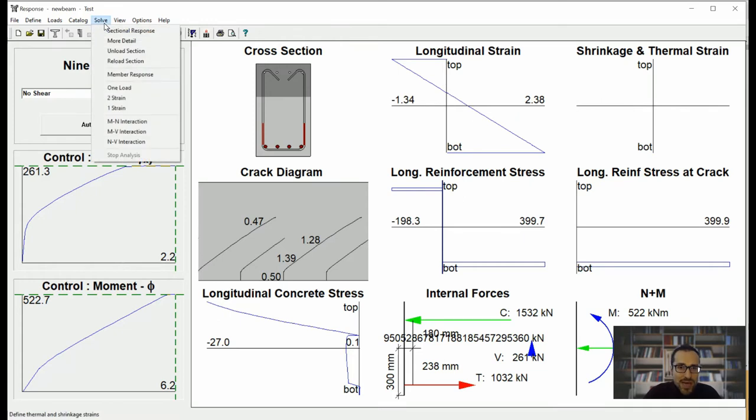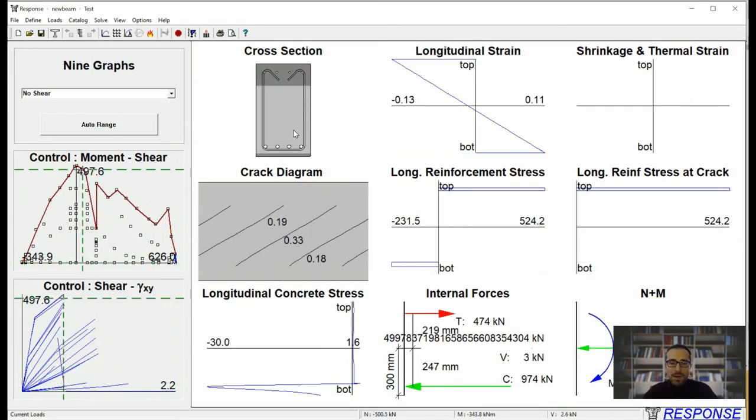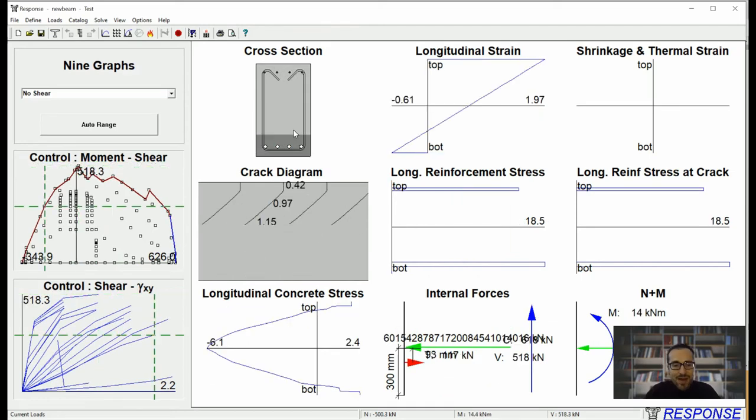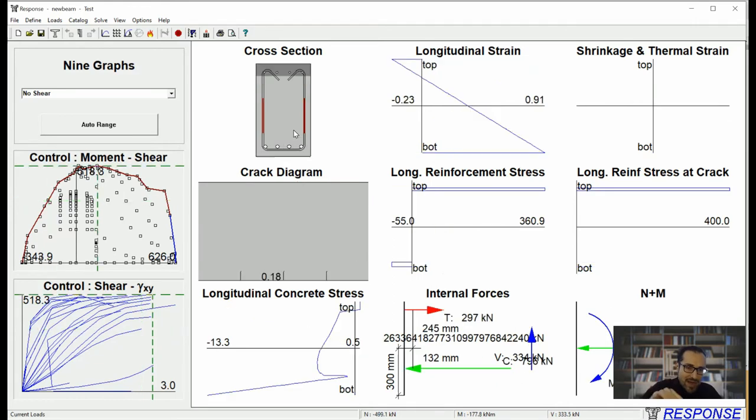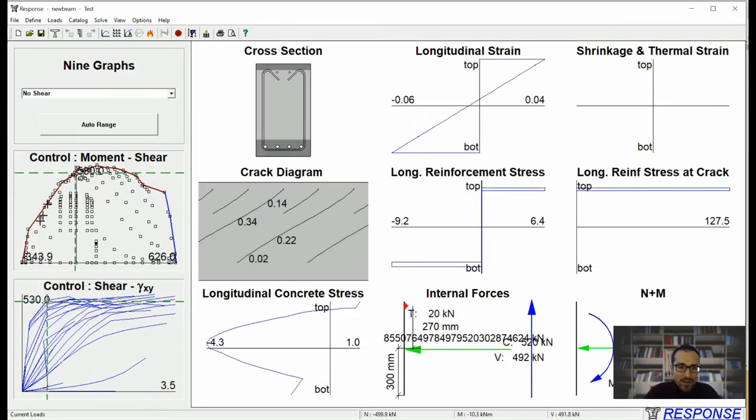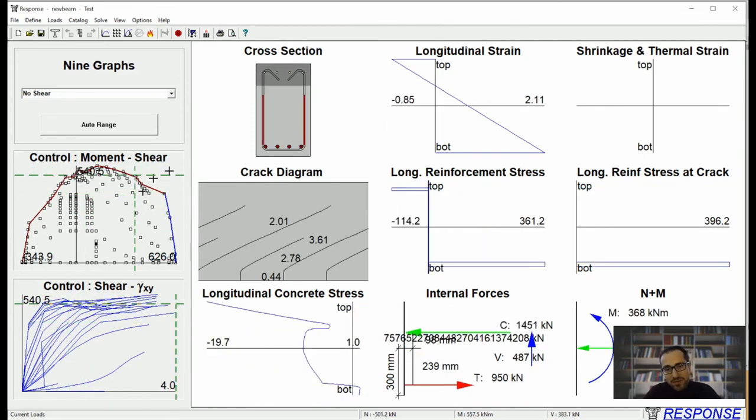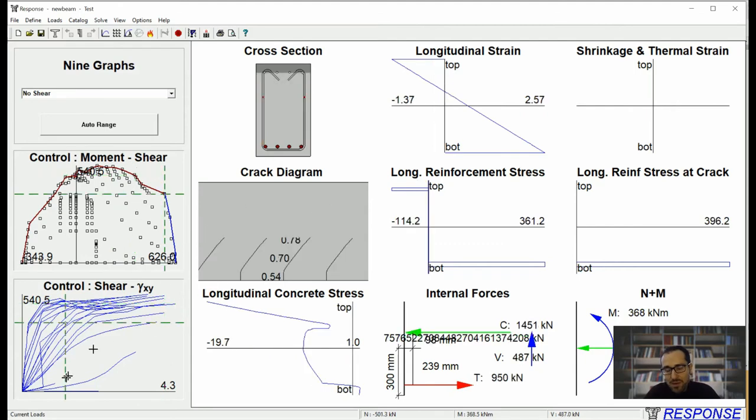If you want to get the interaction diagrams, you can get it which is very useful because it really takes a very long time to do it using other methods. For example, let's get moment-shear interaction. It's going to take a while, but relatively fast, within a couple of minutes, it will give you the envelope which is the red curve outside these dots. Each dot represents one analysis and you can see the program is plotting lots of pushover curves.